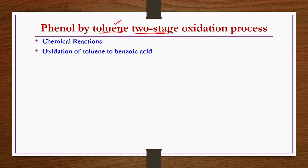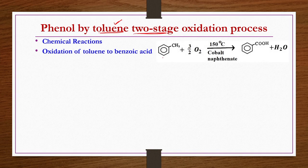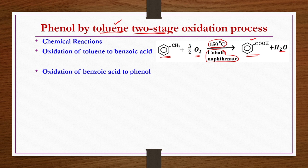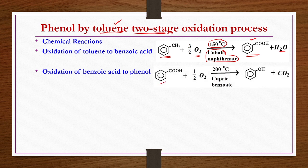We start with the chemical reactions. The first reaction is the oxidation of toluene to benzoic acid: toluene reacts with oxygen at 150°C in the presence of cobalt naphthenate catalyst to give benzoic acid and water. This benzoic acid, if further oxidized, gives phenol — benzoic acid reacting with oxygen at 200°C in the presence of cupric benzoate catalyst yields phenol. Along with phenol, you also get some CO2.